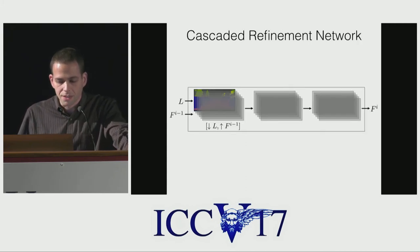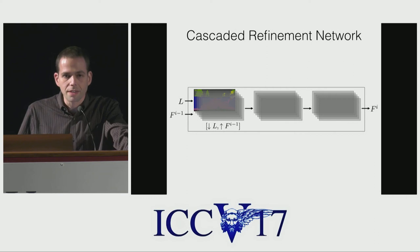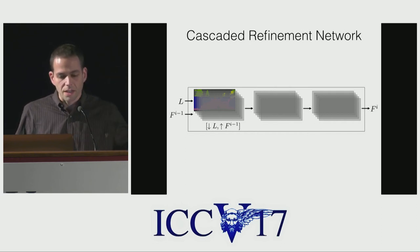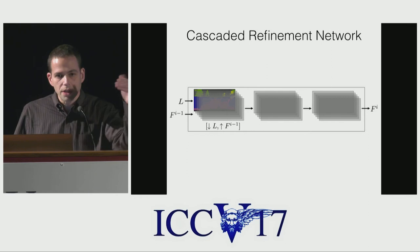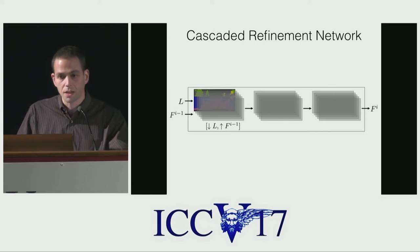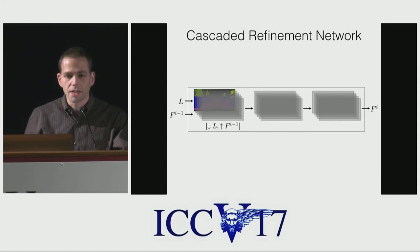The cascaded refinement network is the network that synthesizes the image. What you see on the screen is a single module of a CRN — a cascaded refinement network. We have a module like this at every octave, every level of resolution. We start with very, very low resolution — 4 by 8. We feed in the downsampled label map, downsampled to 4 by 8, and it's taken through a number of convolutional layers. Out comes a set of feature maps at resolution 4 by 8. It's then upsampled with simple bilinear upsampling to 8 by 16.